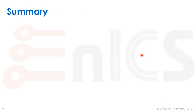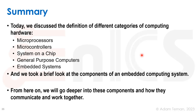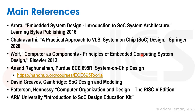As a summary for this introductory lecture, we discussed the definition of different categories of computing hardware: microprocessors, microcontrollers, systems-on-a-chip, general-purpose computers, and embedded systems. We took a brief look at the components of an embedded computing system. From here on in this course, we will go deeper into these components and how they communicate and work together. I used a wide array of references — books, courses, and online resources — to create the material. I hope you enjoy this course and I'm looking forward to providing the next lecture soon.